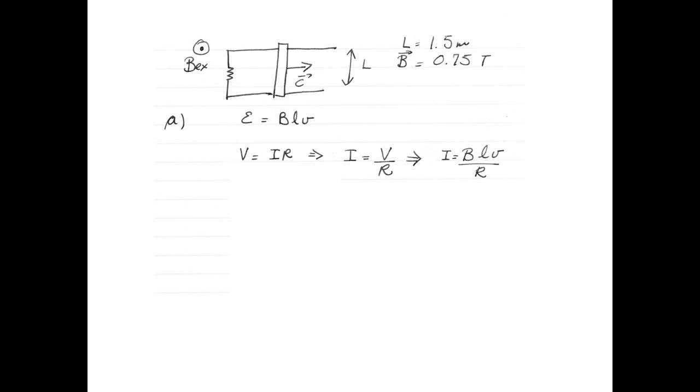This makes the current I equal to BLV over R. The magnetic force on a current carrying branch is given by IL cross B. In this case, the angle between the current carrying rod and the magnetic field is 90 degrees. So when we calculate the magnitude, we will get ILB sine 90. Sine 90 equals 1, so we don't need to worry about it anymore. Replace the current I with BLV over R. This makes the force equal to B squared multiplied by L squared multiplied by V and divided by R.